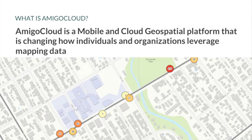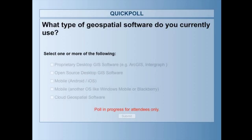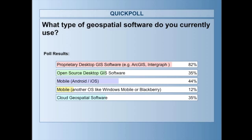We have a simple poll to understand what you're currently using within your organization. From the results, most of you are using proprietary desktop GIS software. Some are using open source desktop GIS software — something like QGIS. Mobile iOS seems to be more popular than Windows and other devices, which is honestly surprising and great to hear. And some are using cloud geospatial software. Excellent — this helps us frame the discussion.